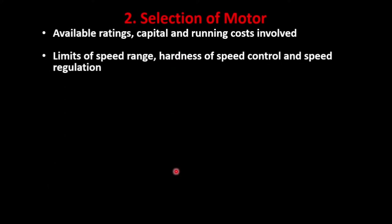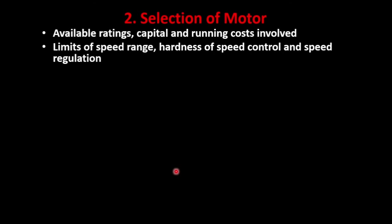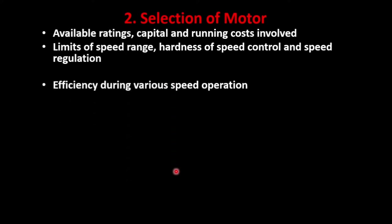Selection of motor — how to select a motor — could be based on these factors: the available ratings, capital and running costs involved, limits of speed range, hardness of speed control, speed regulation — whether we need varying speed or constant speed, how difficult speed control is — all these factors help us in selecting a motor.